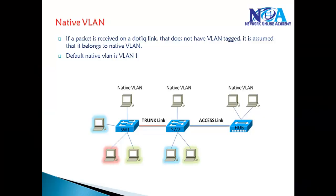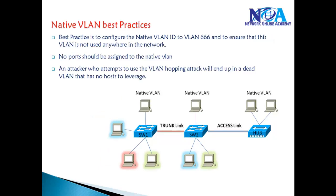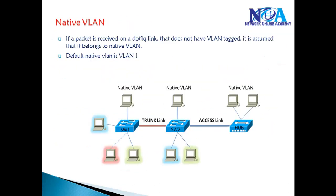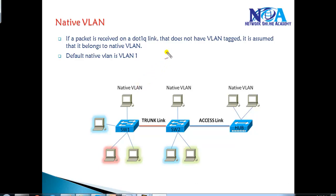In this video we'll talk about the concept of native VLANs — what is native VLAN and what are the best practices we need to follow. Native VLAN is when a switch receives a frame without any tag, it assumes that frame belongs to the native VLAN. For example, if I'm connecting to a hub, any untagged traffic received will be treated this way.